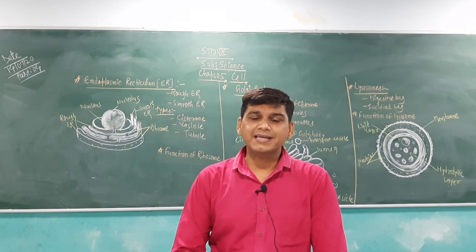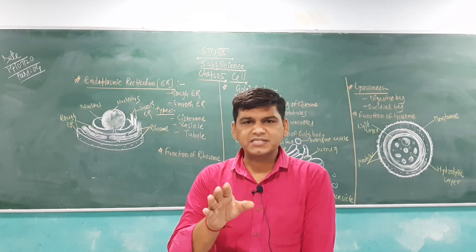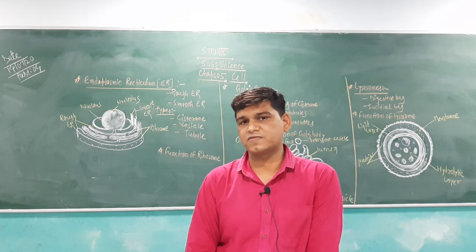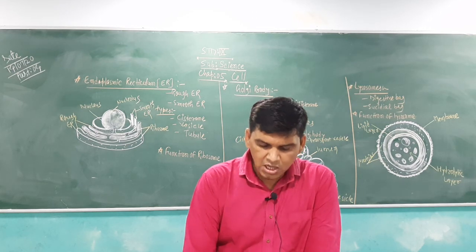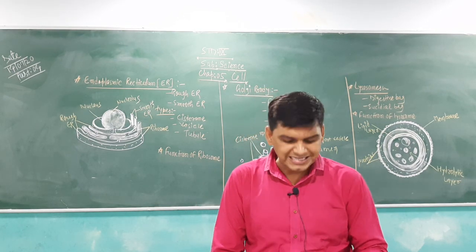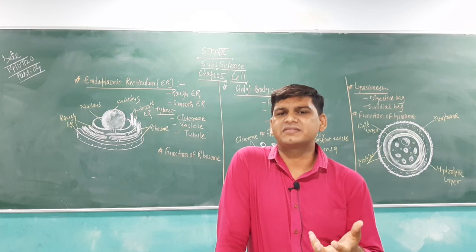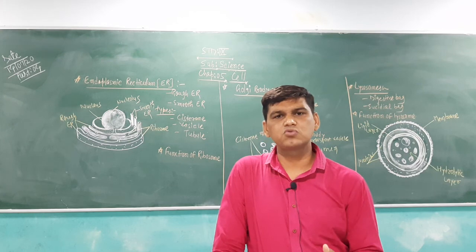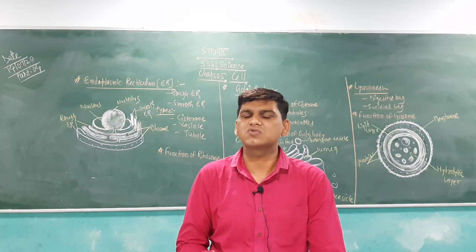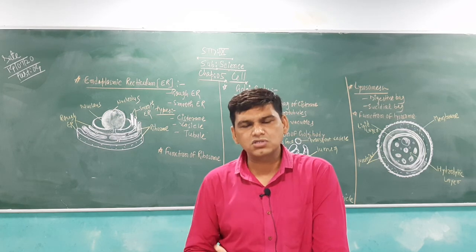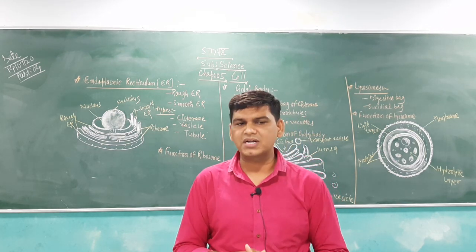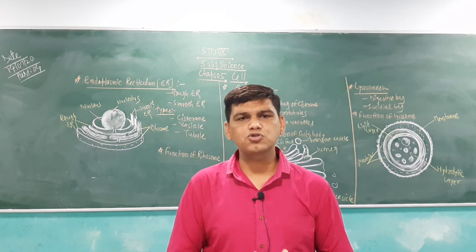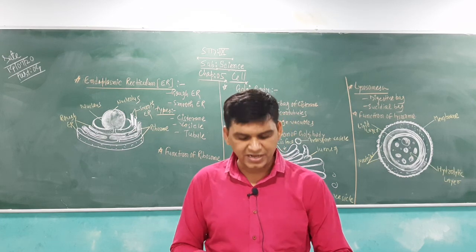The second type is smooth ER. On the outer surfaces of smooth ER, there are no ribosomes attached — hence it is called smooth ER. The main work of smooth ER is secreting lipids. Just as protein synthesis is the work of ribosomes in rough ER, the work of smooth ER is secretion of lipids. It also helps to synthesize, store, and secrete glycogen. This work is also done by the smooth ER.